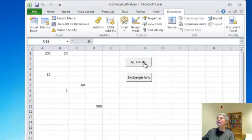And here I set up a button that's associated with the macro that exchanges A1 and B1. So here's A1, it has 200, B1 has 10. Let's exchange them. And there you see, and I can just keep clicking and exchanging as much as I want.